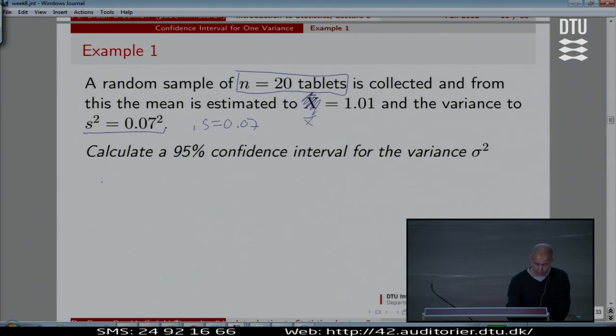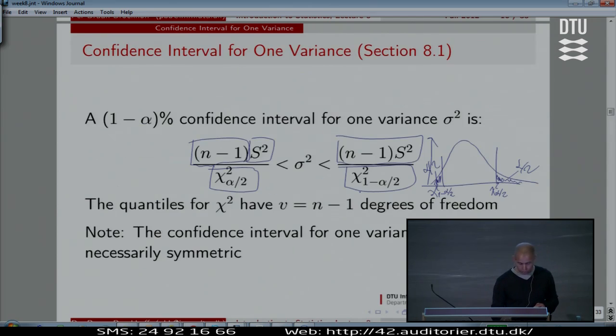What should we do? We should take n minus 1 times the computed variance divided by something less than the same. Now, n minus 1 times the computed variance divided by something. What should we divide by? Yeah, we should find these two. We should find these two quantiles in the chi-square distribution. Let's go find them in the two ways we can find them.